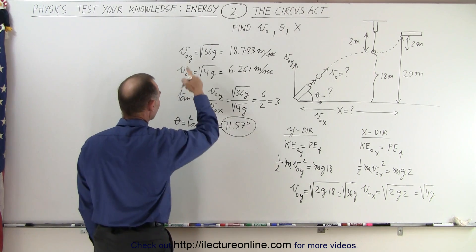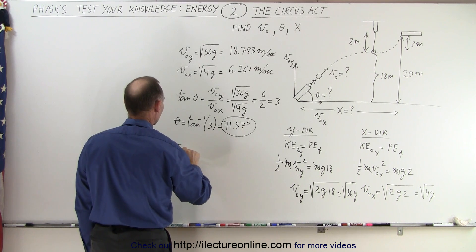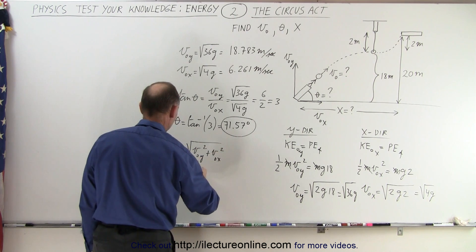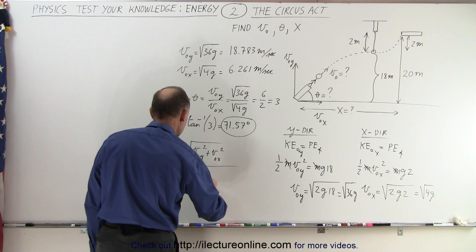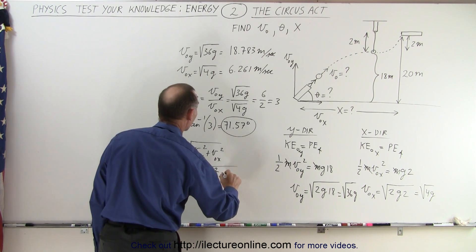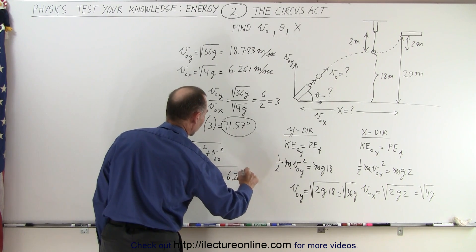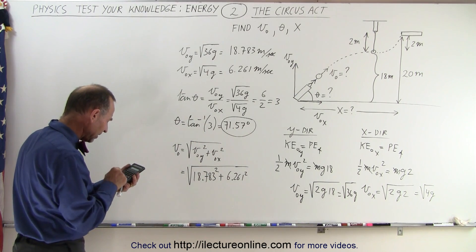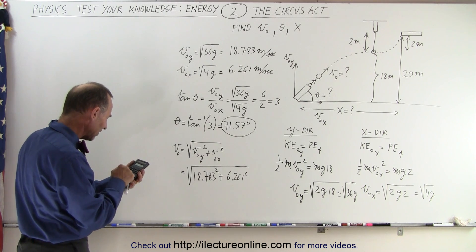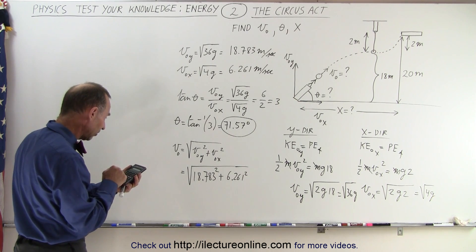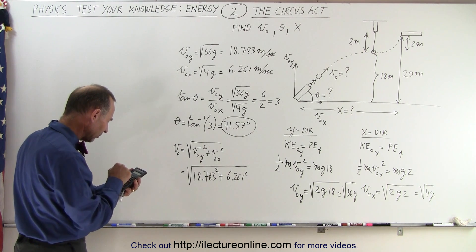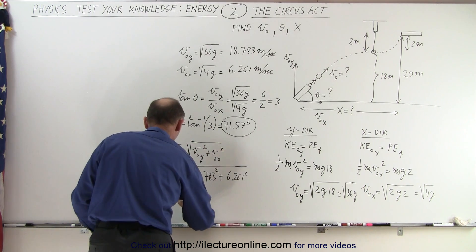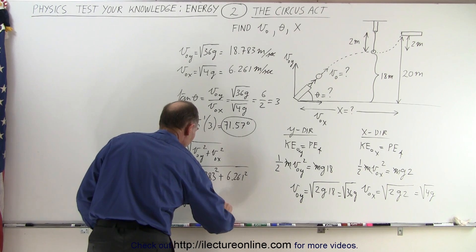The initial velocity can be found using: v initial = √(v_y² + v_x²) = √(18.783² + 6.261²). Computing that: 18.783 squared plus 6.261 squared, take the square root, and we get 19.8 meters per second. So v initial must be equal to 19.8 meters per second.